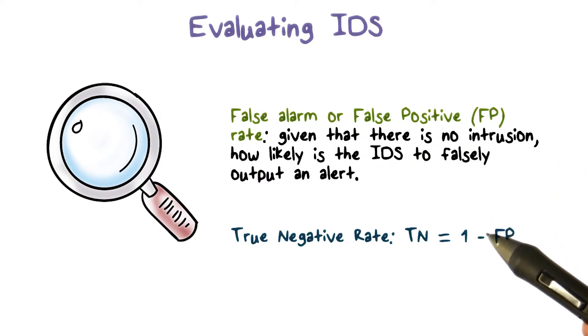We can also use true negative rate. That is, how likely normal activities are correctly classified as normal.